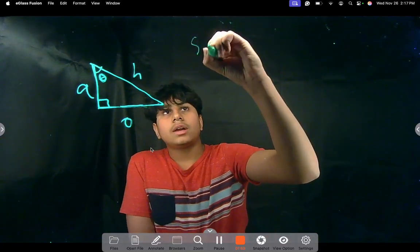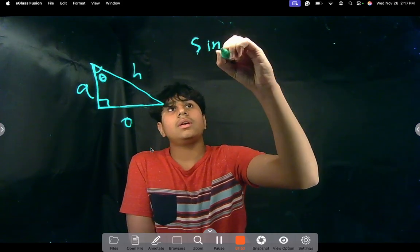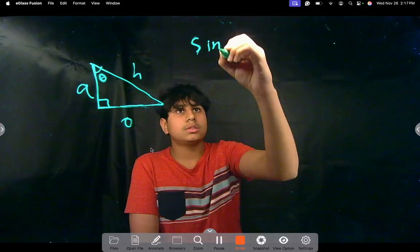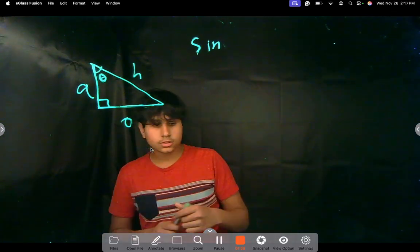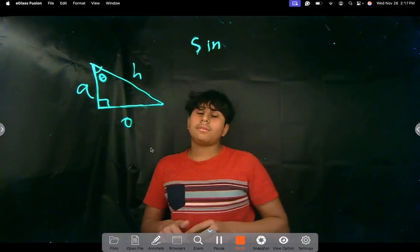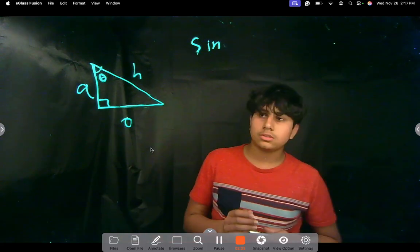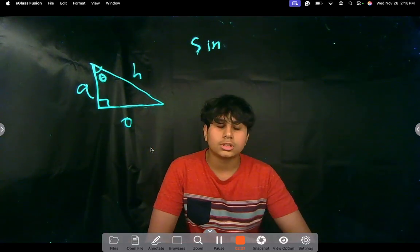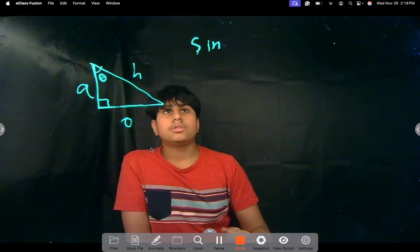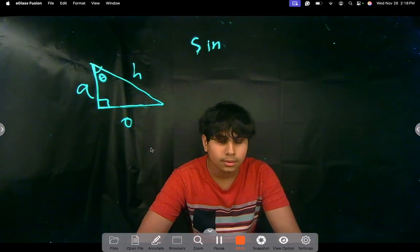So, first we have sine. You write it as S-I-N, but it's actually S-I-N-E, but that's fine. Sine. Then we have cos, which is short for cosine. We have tan, which is short for tangent. Cosine, and then tangent. And then, yeah, we have a few more.